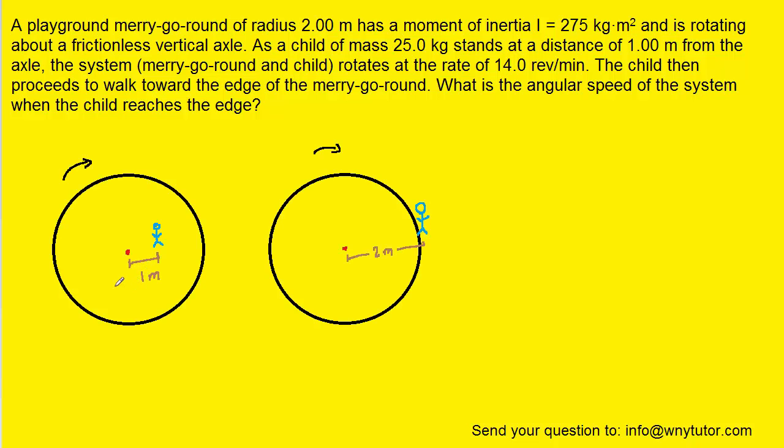So initially the child and merry-go-round are rotating at a certain angular velocity and the child is standing only one meter from the center of the merry-go-round. But then he walks out to the edge and ends up being two meters from the center. And our task is to figure out what the new angular speed is after the child moves out to the edge.